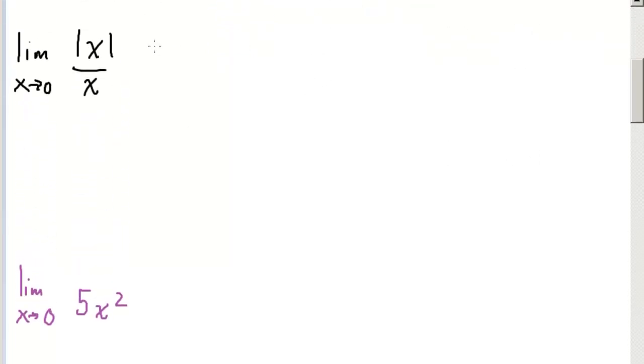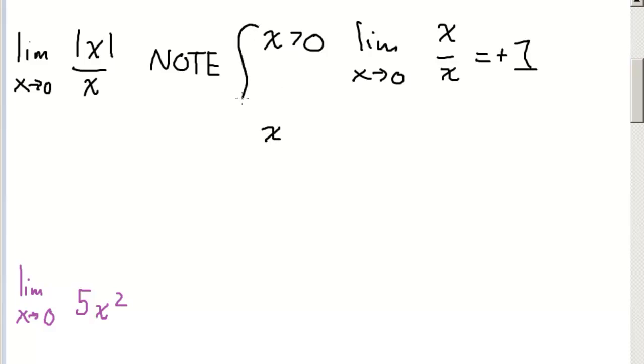For the absolute value function, note that for x greater than 0, this is just the limit as x goes to 0 of x over x, which is just positive 1.